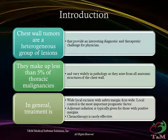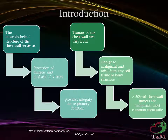Chest wall tumors arise from all anatomic structures of the chest wall. In general, treatment is wide local excision. The margins for malignant disease are necessarily wider, and adjuvant radiation is typically given for those with positive margins. Chemotherapy is rarely effective. Local control is the most important prognostic factor, and disease-free survival for malignant disease is limited by positive margins. Therefore, full oncologic resection with 4 cm margin should be attempted.